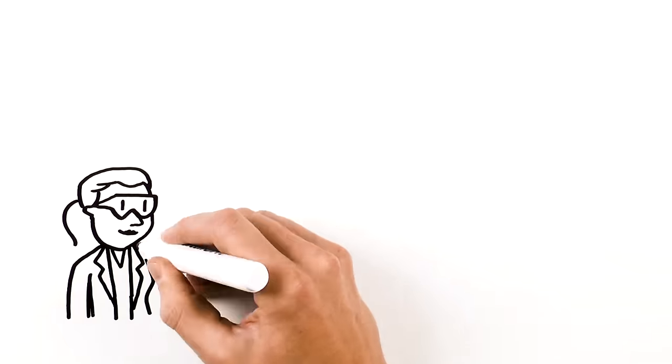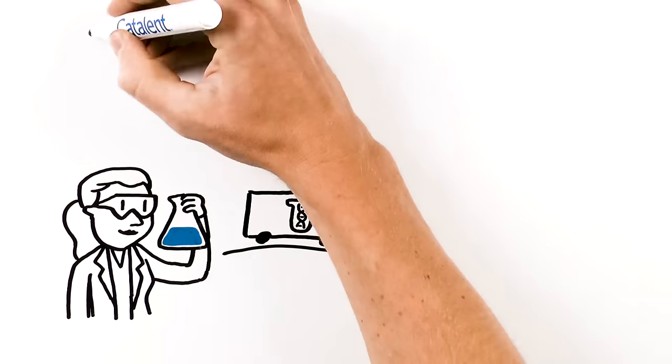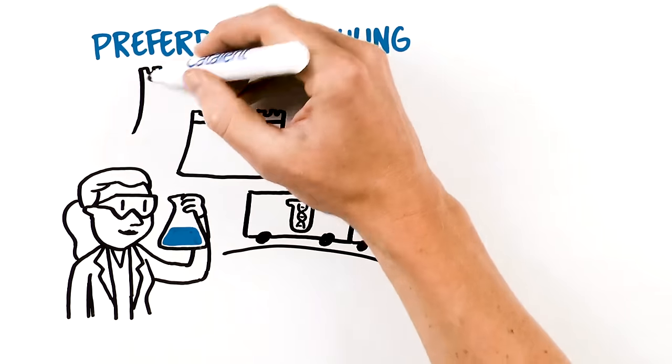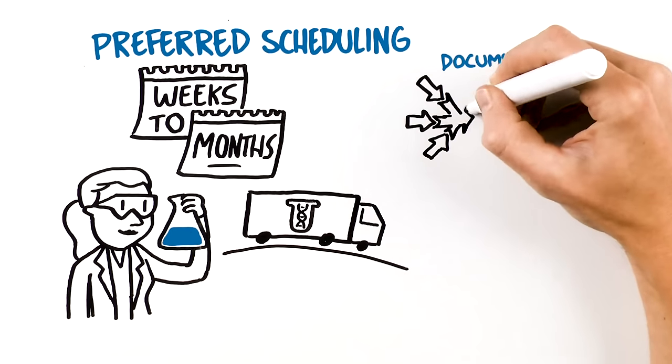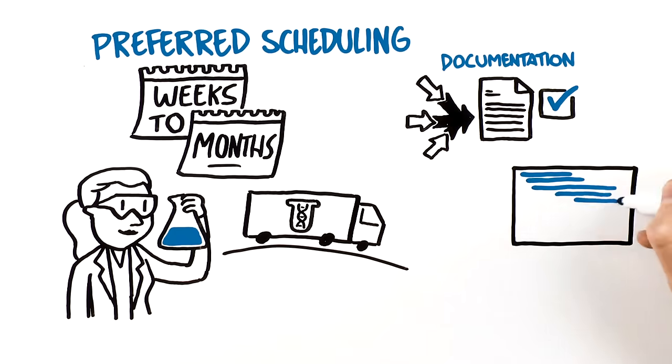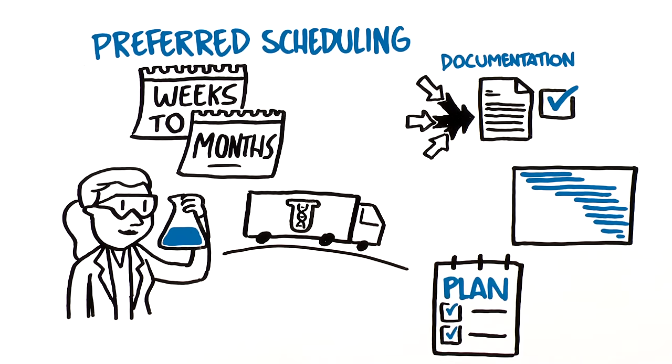From cell line development through clinical supply, One BioSuite has the potential to provide weeks to months of time savings through streamlined documentation, parallel processing, and improved planning for both manufacturing and clinical trial supply.